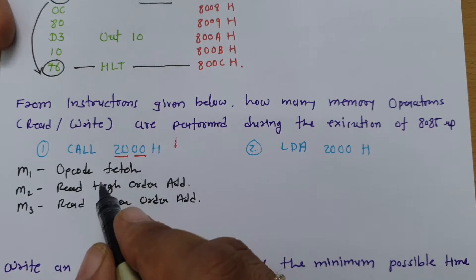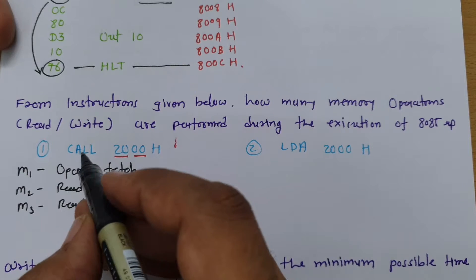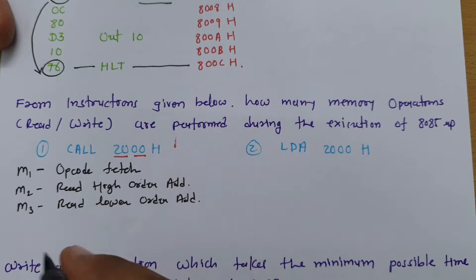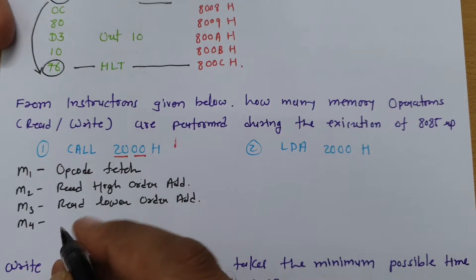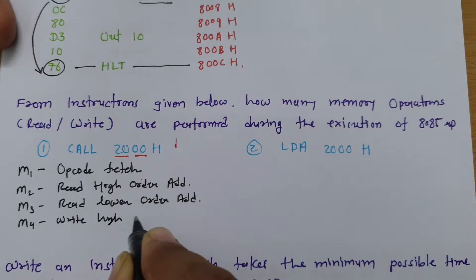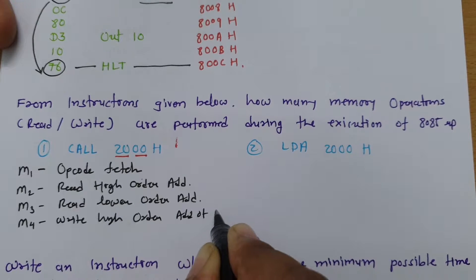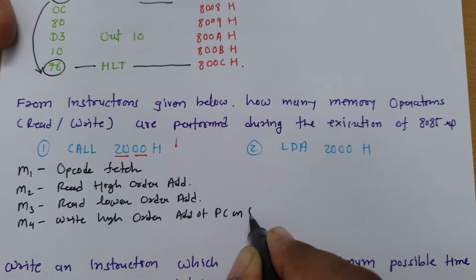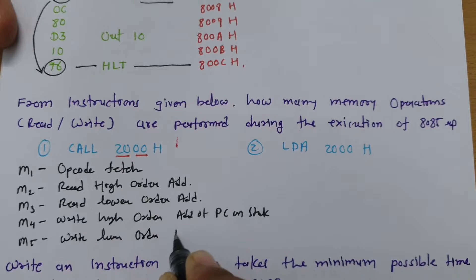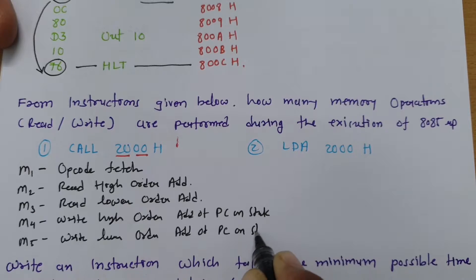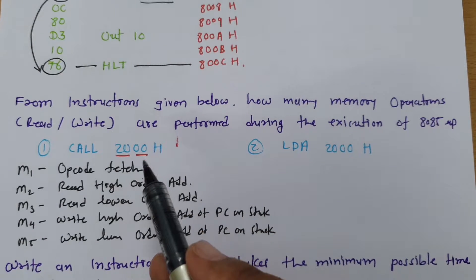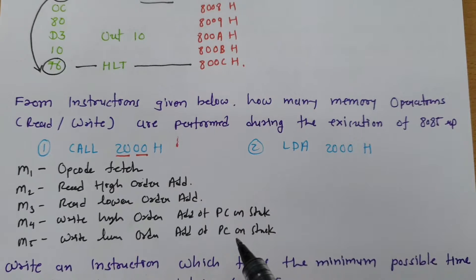In the CALL instruction, after reading the address, it stores the program counter data onto the stack. So in the fourth machine cycle it writes the higher-order address of the PC onto the stack, and in the fifth machine cycle it writes the lower-order address of the program counter onto the stack. So these are the operations in a CALL instruction: opcode fetch, read higher and lower order address, then write higher and lower order address of PC onto the stack.